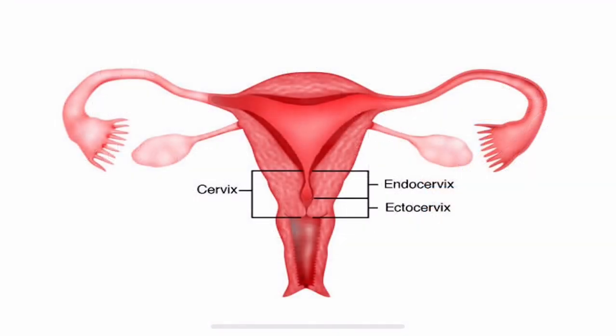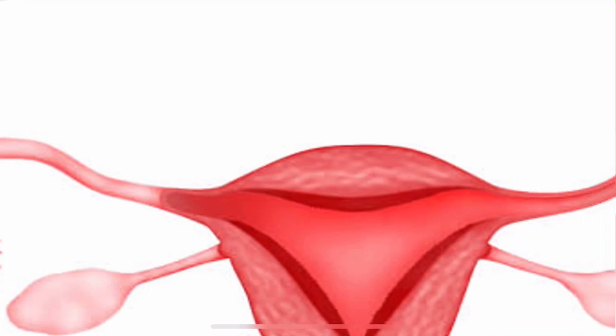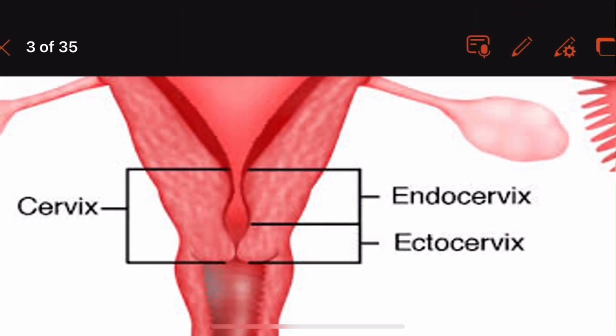The cervix has two parts: ectocervix and endocervix. The ectocervix is the one which can be seen during gynecological examination, as it continues as the vagina. The endocervix is the inner part of the cervix, forming a canal which connects the vagina to the uterus.